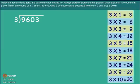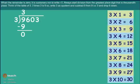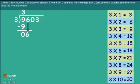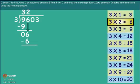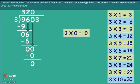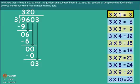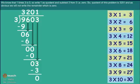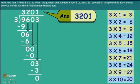Think of the table of 3. Write 3 as quotient and subtract 9 from 9, then drop 6. 2 times 3 is 6, so write 2 as quotient and subtract 6 from 6, then drop the next digit. 0 comes in the 3 table 0 times. We know 1 times 3 is 3, so write 1 as quotient and subtract 3 from 3. The quotient of this problem is 3, 2, 0, 1 and we do not write the remainder which is 0.